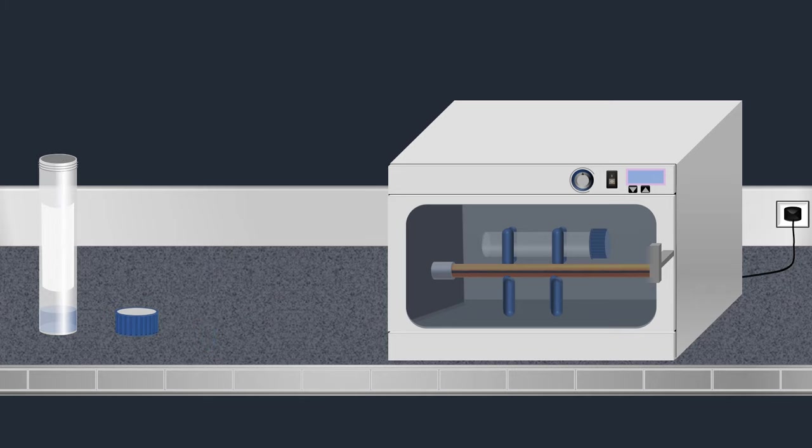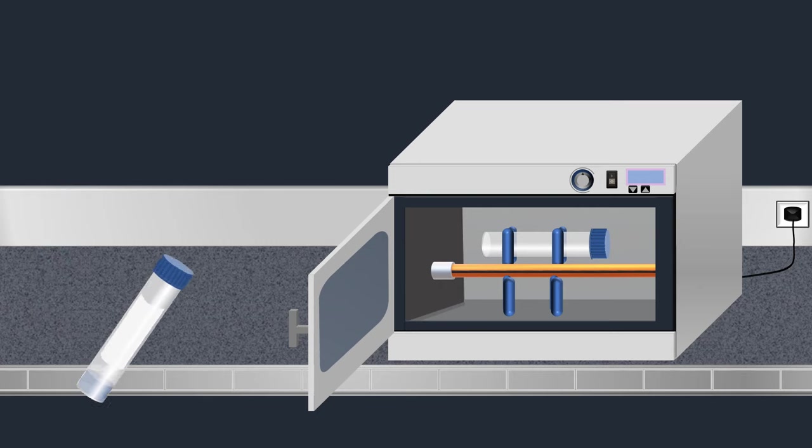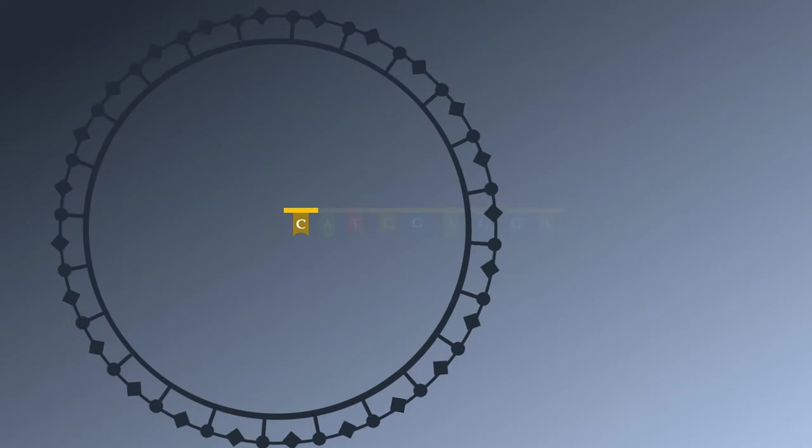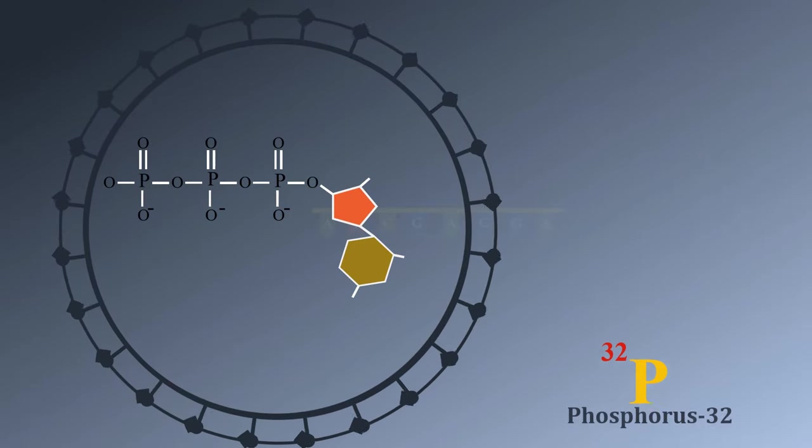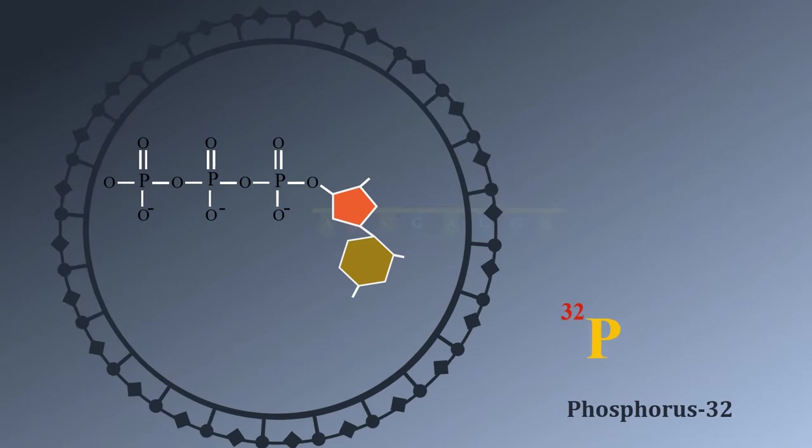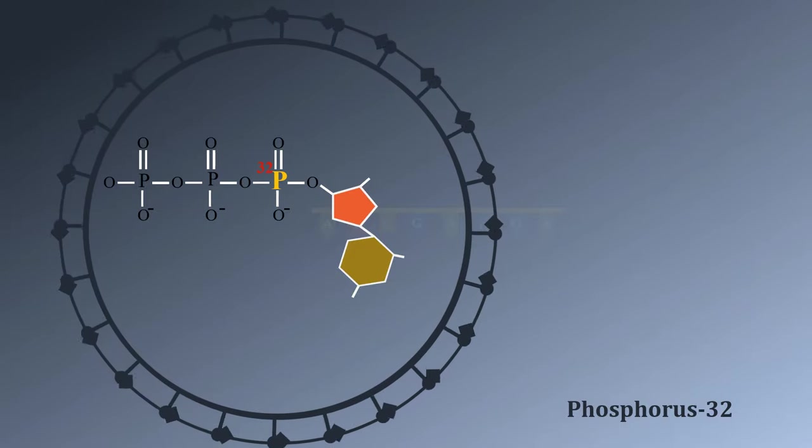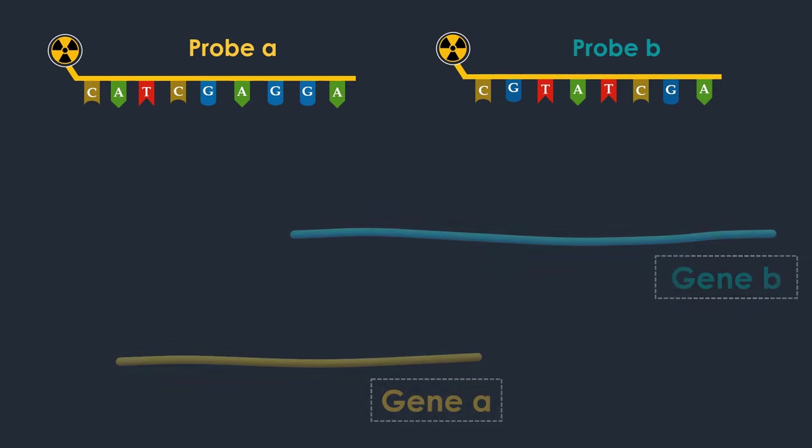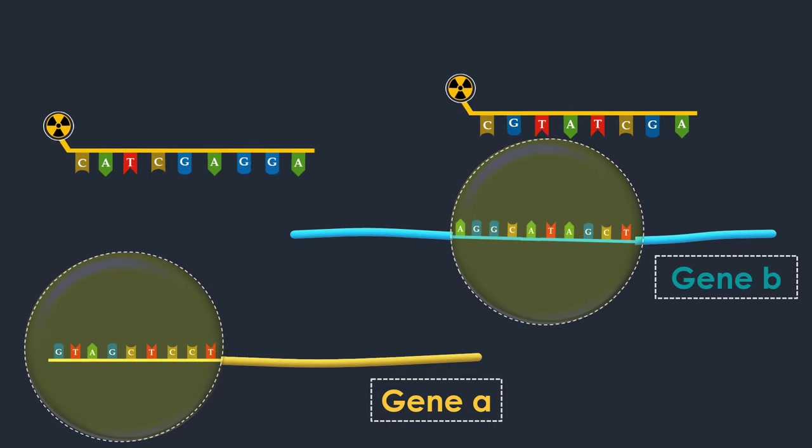Once the hybridization probes are added, the bottle is incubated overnight in the hybridization oven at 42 degrees Celsius. DNA contains a large quantity of phosphorus in the phosphodiester linkages between bases in the oligonucleotide chain. DNA can therefore be tracked by replacing its non-radioactive phosphorus with radioactive phosphorus-32. The radioactively labeled DNA probes hybridize to their complementary sequences in the DNA fragments.